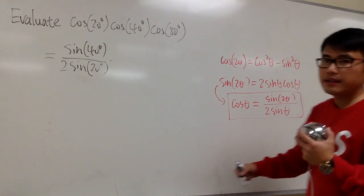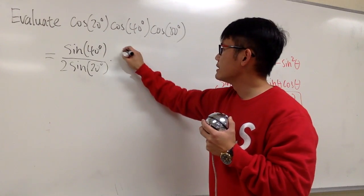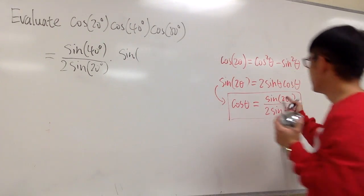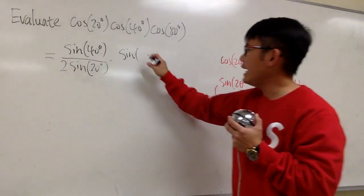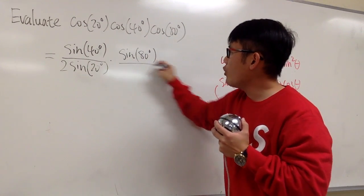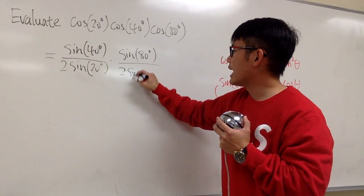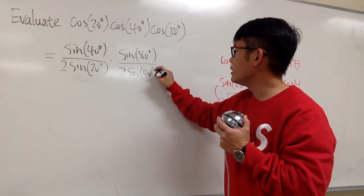So that means we have sine of 2 times 40, which is 80 degrees, over 2 sine of this angle, which is 40 degrees.